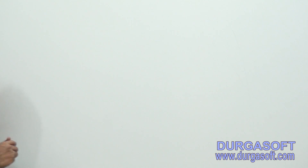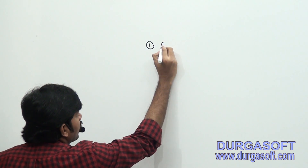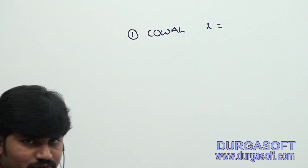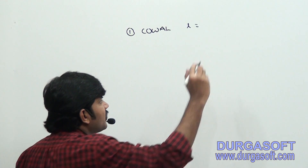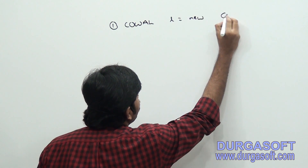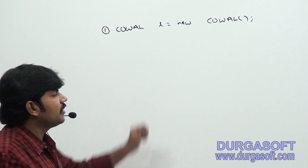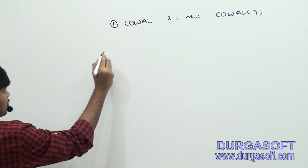Now I will explain what are the various constructors for CopyOnWriteArrayList. Very simple. The first constructor: CopyOnWriteArrayList l = new CopyOnWriteArrayList() — you are just creating an empty CopyOnWriteArrayList object. This is the first constructor.